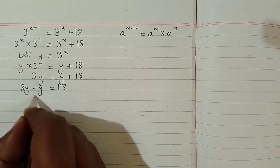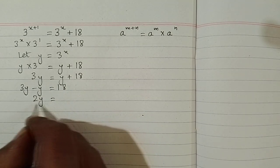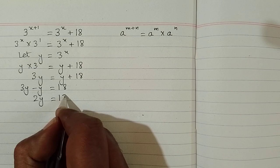So 3y minus y is equal to 2y so we have 2y is equal to 18.